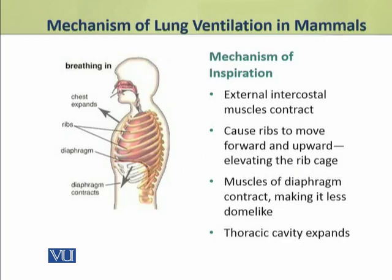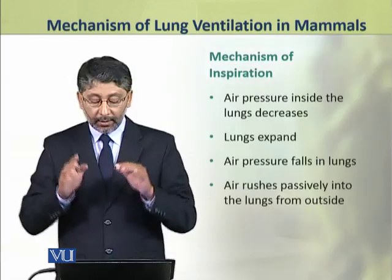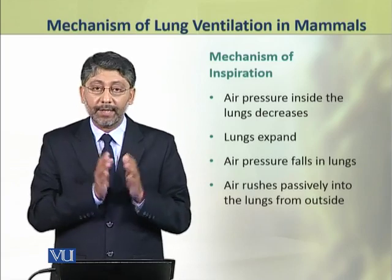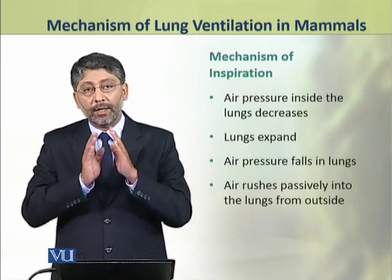Now we shall discuss the mechanism of inspiration. Inspiration happens when the external intercostal muscles contract and cause the ribs to move forward and upward, elevating the rib cage. Along with this, muscles of the diaphragm also contract, making it less dome-like. The combined effect of these two actions is that the thoracic cavity expands. The chest expands, and the pressure of air inside the lungs decreases. As a result, the lungs expand.